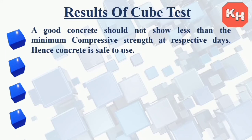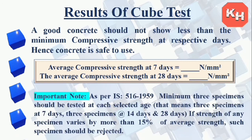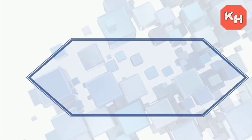A good concrete should not show less than the minimum compressive strength at respective days. Hence, this concrete is safe to use. As per Indian Standard 516:1959, a minimum of three specimens should be tested at each selected age — at 7, 14, and 28 days. If the strength of any specimen varies by more than 15%, the average strength of such a specimen should be rejected. I hope you have understood the topic completely; please feel free to comment, and don't forget to subscribe to my channel.